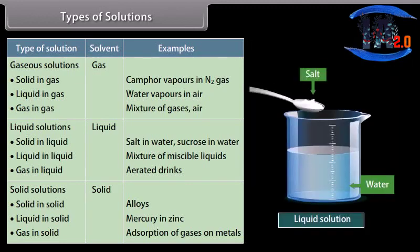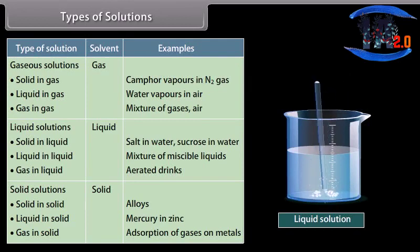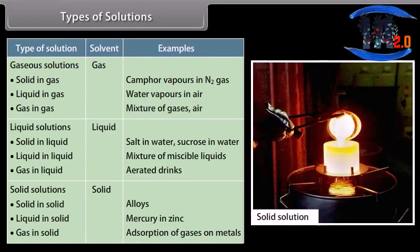In liquid solutions, liquid is the solvent. They are categorized as: solid in liquid, for example salt in water or sucrose in water; liquid in liquid, for example mixture of miscible liquids; gas in liquid, for example aerated drinks. In solid solutions, solid is the solvent. They are categorized as: solid in solid, for example alloys; liquid in solid, for example mercury in zinc; gas in solid, for example adsorption of gases on metals.